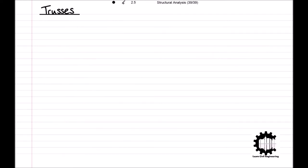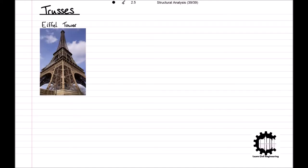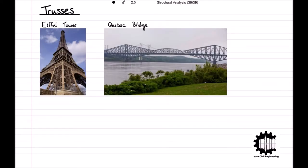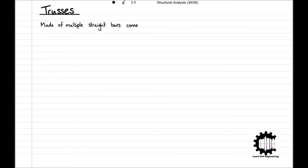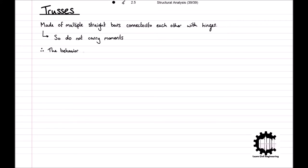Trusses are commonly found in large structures, particularly for large spans. Some examples of such structures that you'll likely be familiar with are the Eiffel Tower in Paris and the Quebec Bridge, which has a span of 549 meters. Trusses are made of multiple straight bars connected to one another with hinges, and therefore they do not carry moments. This results in a significant advantage where the connections between the elements are simple, and so the behavior of the truss structure is relatively simple.